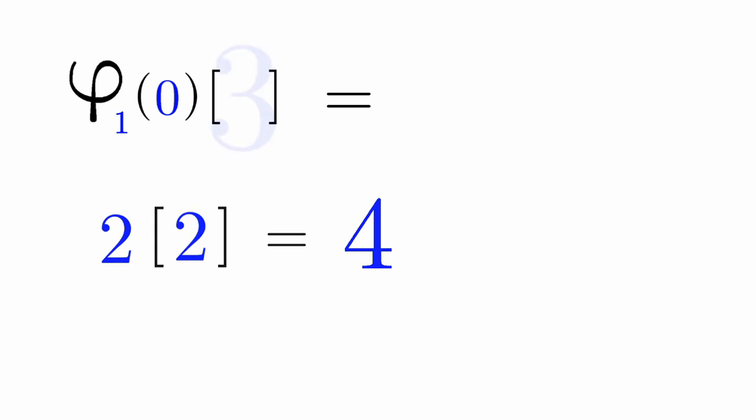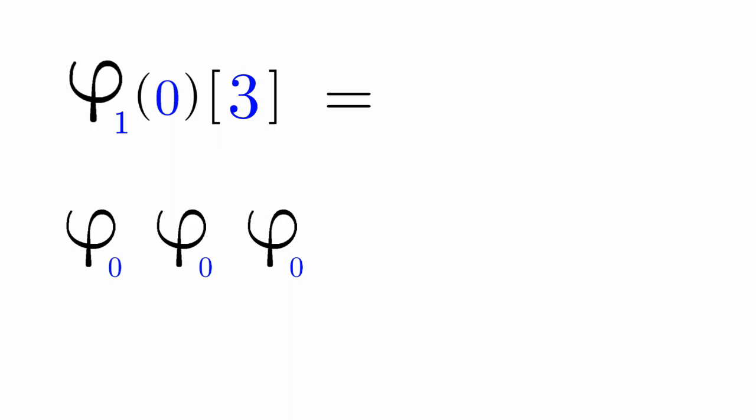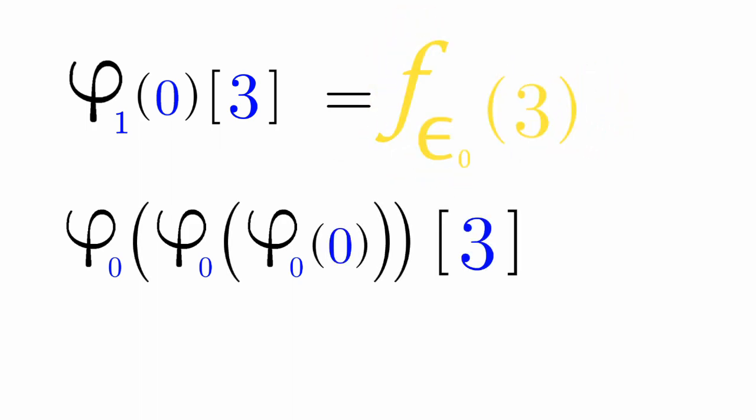If we did Phi 1 of 3, that's going to be 3 copies of the Phi 0 function. This is equal to F Epsilon 0 of 3.